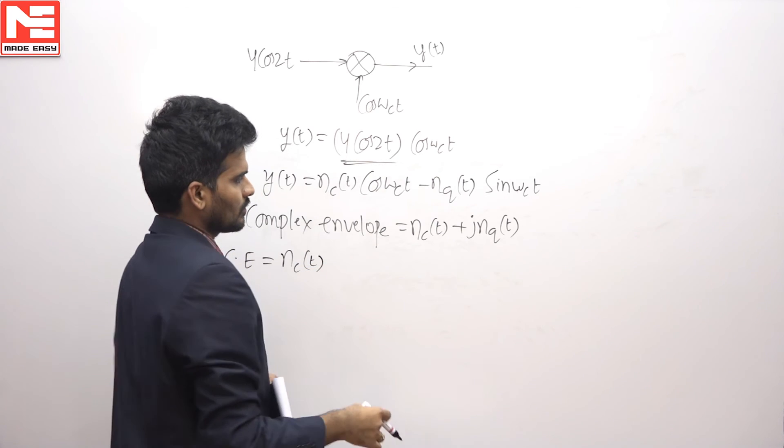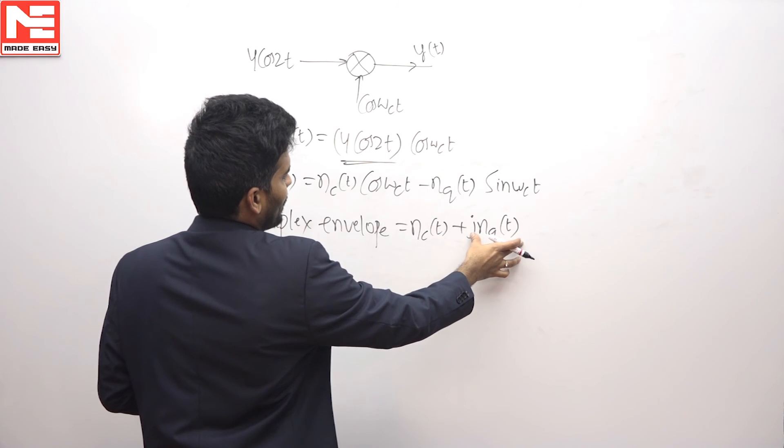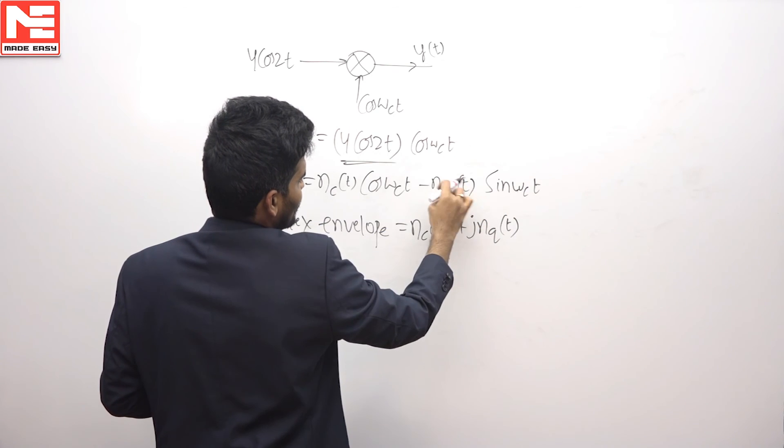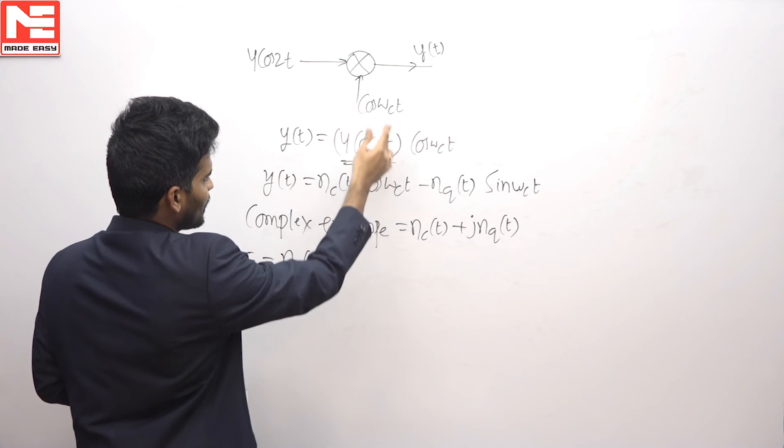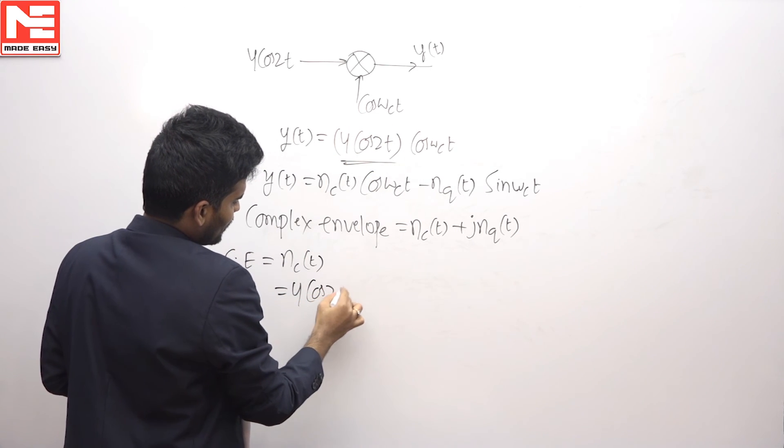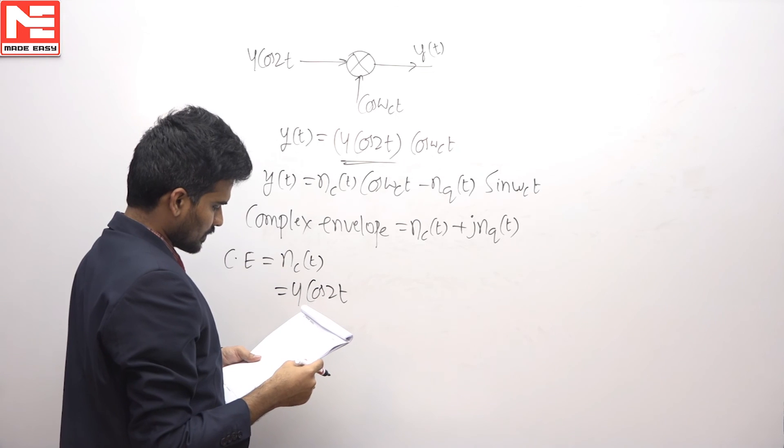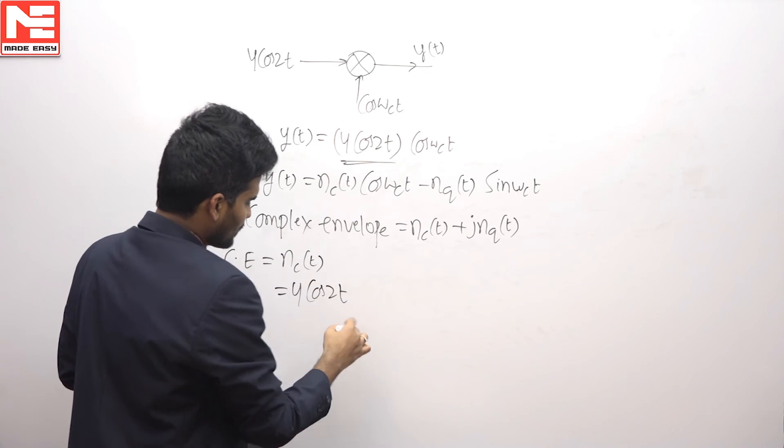Only because from comparison, since there are no sine terms here, nq(t) will be 0. So the complex envelope is simply nc(t). That nc(t) will be 4 cos 2t. The option will be 4 cos 2t.